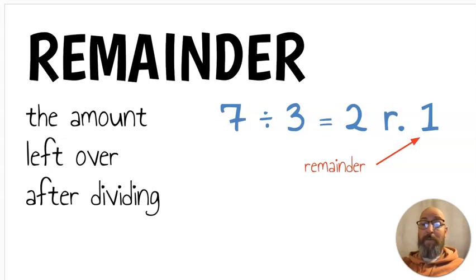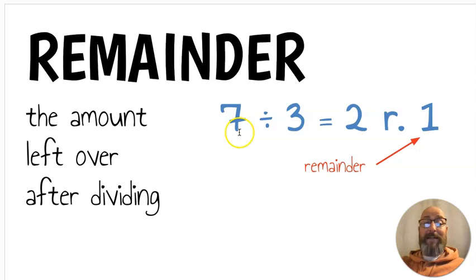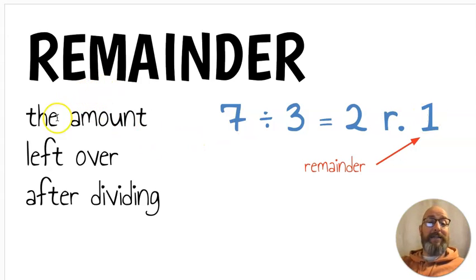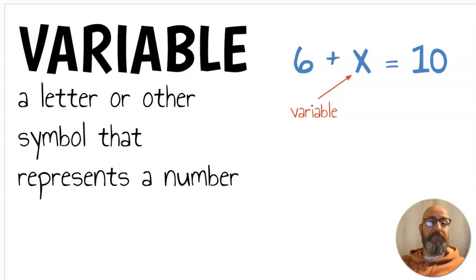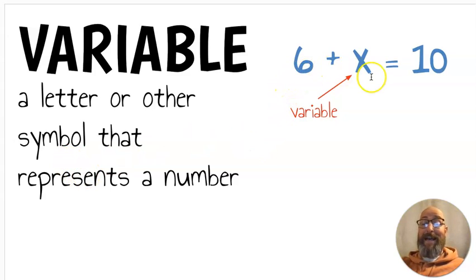Next we have remainder. A remainder is the amount left over after dividing. Sometimes when you divide you have some left over. If I divide seven by three, three goes into seven two times, which makes six, and seven minus six is one — that's the remainder, that's what's left. Next, a variable is a letter or other symbol that represents a number. You may have seen a problem like six plus x equals four — x is a variable, a letter or symbol that represents a number.